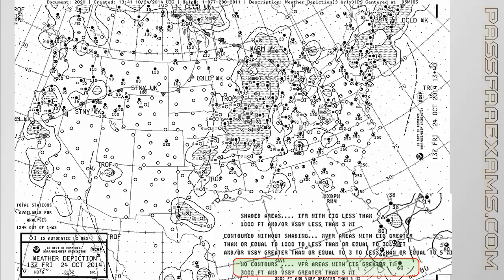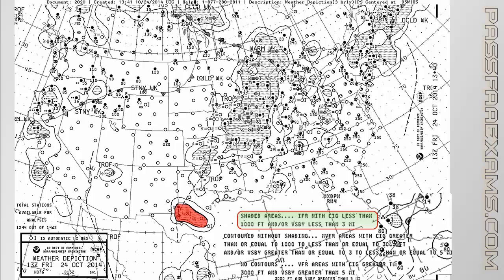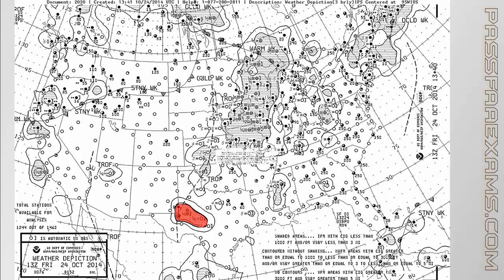As you can see from the legend, no contour indicates VFR, or ceilings greater than 3,000 feet and/or visibilities greater than 5 miles. One contour with no shading signifies marginal VFR, or ceilings between 1,000 and 3,000 feet and visibilities between 3 and 5 miles. A shaded contour inside a clear one signifies IFR conditions — ceilings less than 1,000 feet and visibilities less than 3 miles. The chart also shows frontal activity, whether it's a cold front like the one extending from the north central part of the US all the way to Northern California, warm fronts, etc.